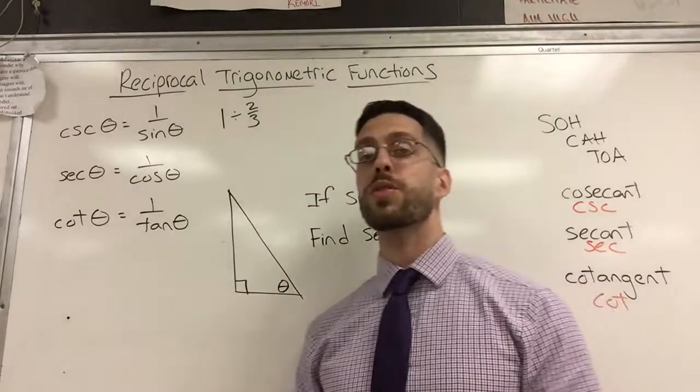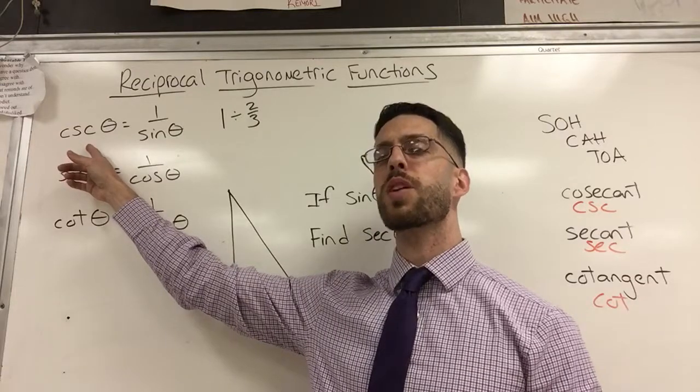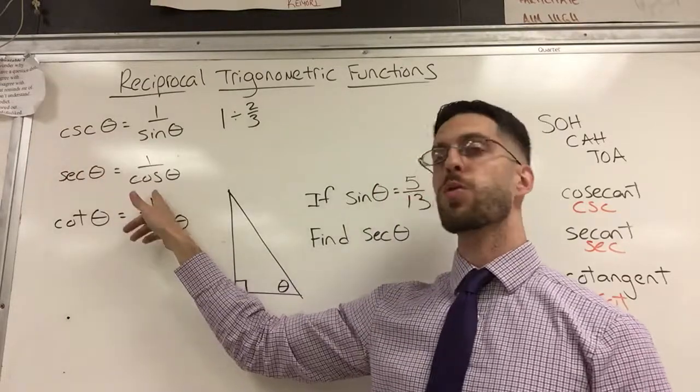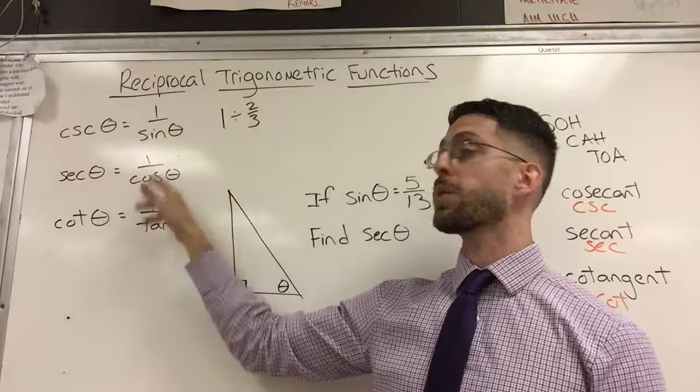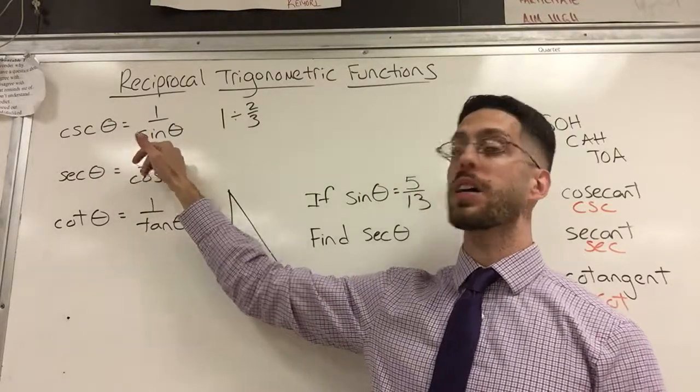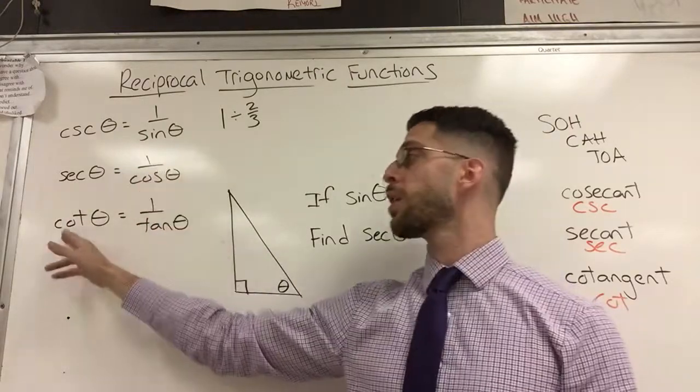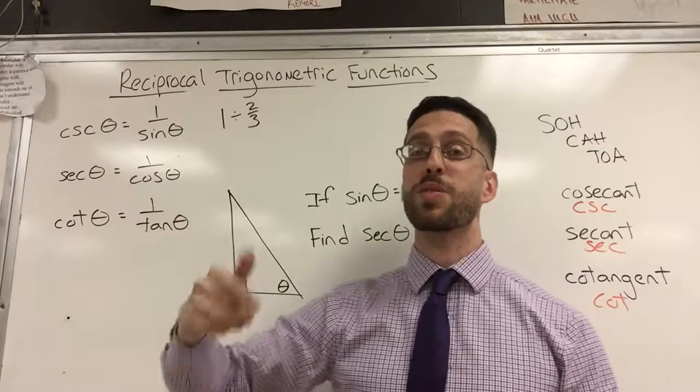So when I first learned it, I remember thinking cosecant sounds like cosine. Shouldn't it be the reciprocal of cosine? But it's not. It's actually a little bit counterintuitive here. Cosecant is the reciprocal or the flip of sine and then secant is the reciprocal or flip of cosine. Cotangent actually makes perfect sense. It's the reciprocal of tangent.